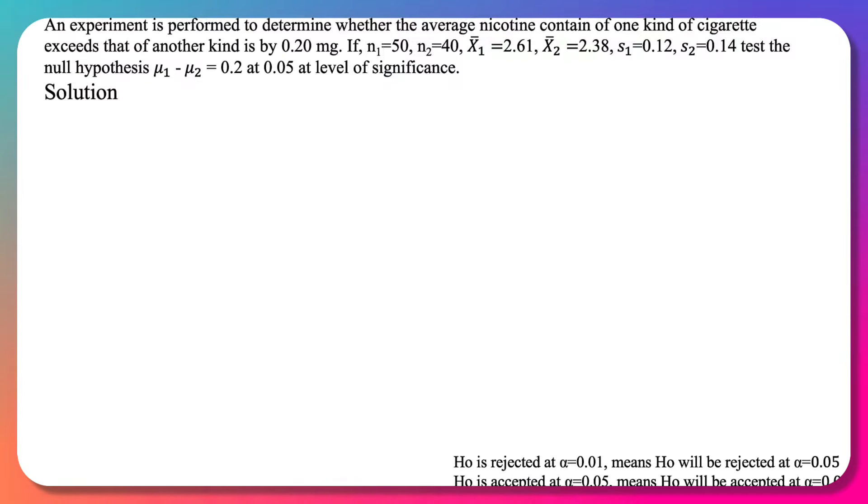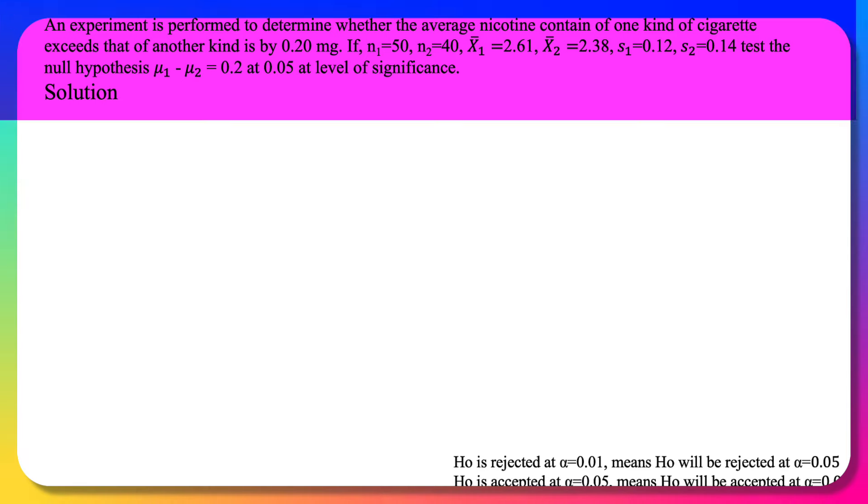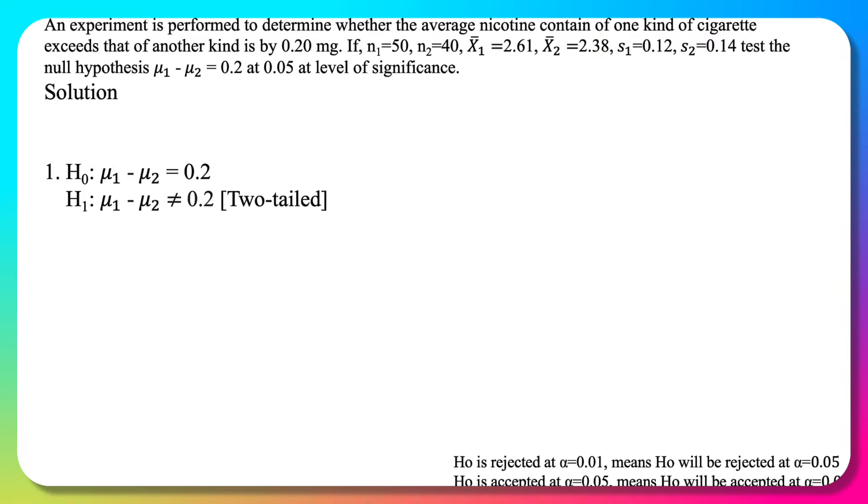Now let's look at an example. An experiment is performed to determine whether the average nicotine content of one kind of cigarette exceeds that of another kind by 0.20 mg. Given values for n1, n2, x1-bar, x2-bar, s1, and s2, we test the null hypothesis μ1 - μ2 = 0.2 at 0.05 level of significance.